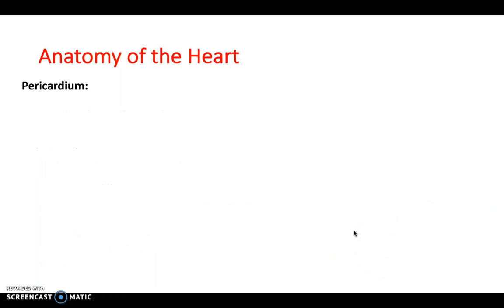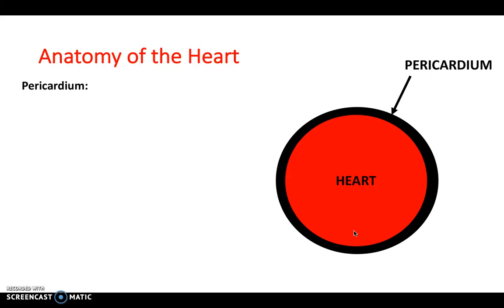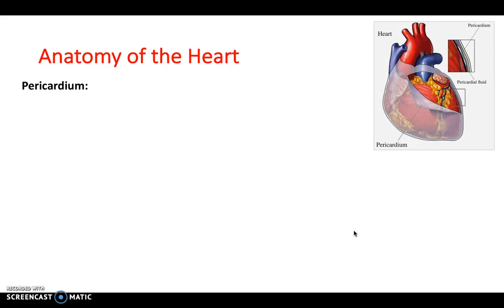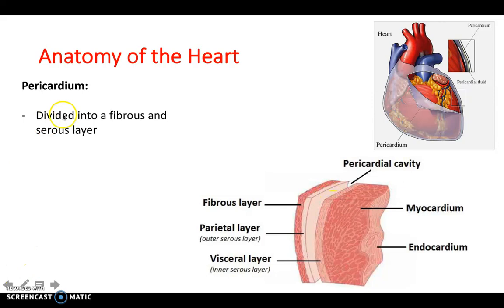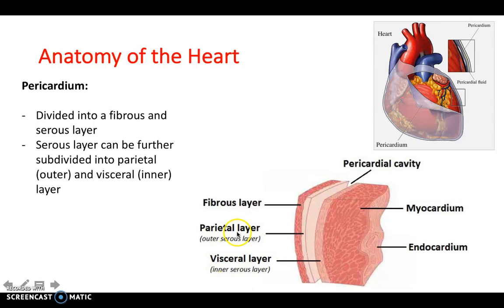Another important concept is the pericardium — it's a layer that surrounds the heart. The heart has three layers: the endocardium inner layer, the myocardium muscular layer, and then the outer epicardium, also called the visceral serous layer. The pericardium itself is divided into a fibrous layer on the outside and a serous layer, which is further subdivided into a parietal and a visceral layer. Between these two layers you have the pericardial cavity, which contains pericardial fluid that allows lubrication of the heart to allow it to expand and beat.